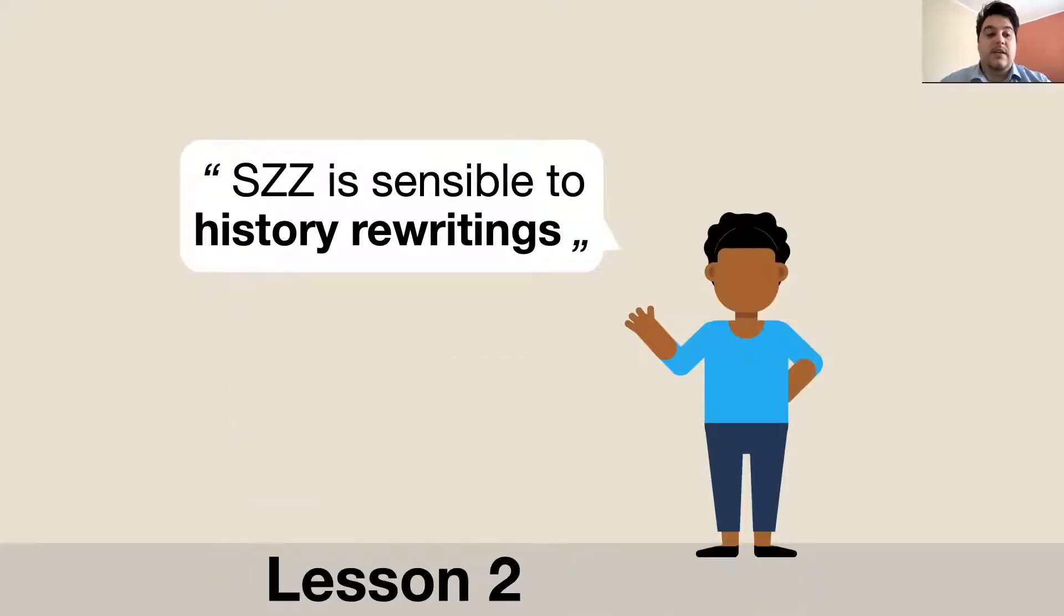Lesson two, SZZ is sensible to history rewrites, which means that in the case there is a revert commit, the SZZ can fail to extract the bug-inducing change.